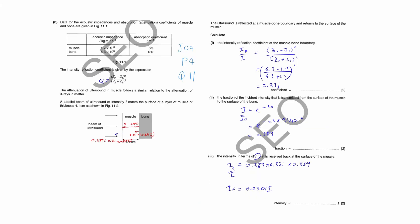Calculate the intensity reflection coefficient at the muscle-bone boundary. At the muscle-bone boundary, your first medium will be muscle and the second medium will be bone. When you substitute IR over I — the intensity reflection coefficient — you substitute Z2 as bone, using the acoustic impedance for bone, then minus Z1 for muscle. Then you do Z2 plus Z1 squared, and you should get 0.331.